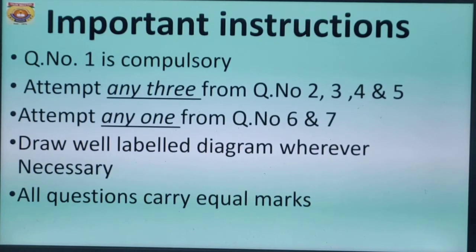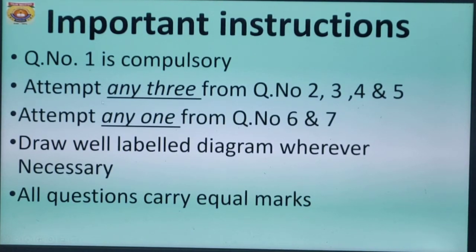Now I'm giving you some important instructions which you have to follow while solving your examination paper. Children, question number 1 is compulsory. There is no option to leave question number 1. Now we move on to the next: attempt any 3 from question numbers 2, 3, 4, and 5. Then, attempt any 1 from question number 6 and question number 7. Draw well-labeled diagrams wherever necessary. Children, drawing diagrams is very important because it increases your marks. All questions carry equal marks, that is 10 marks each.